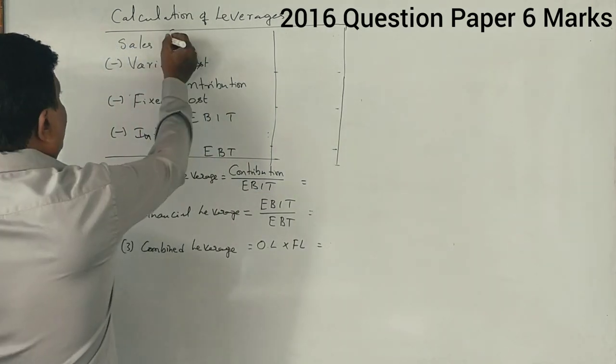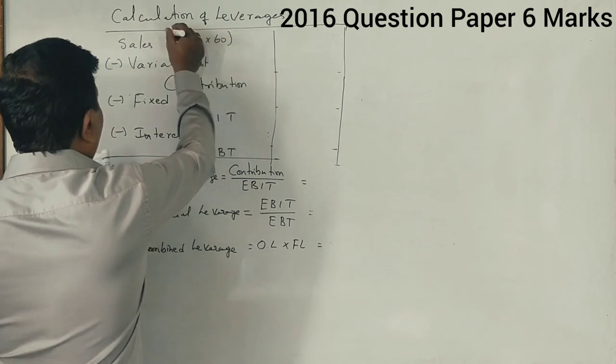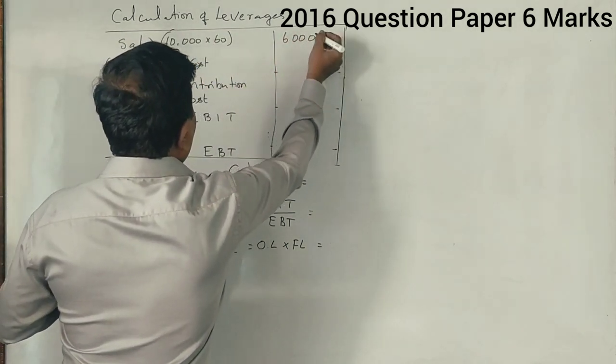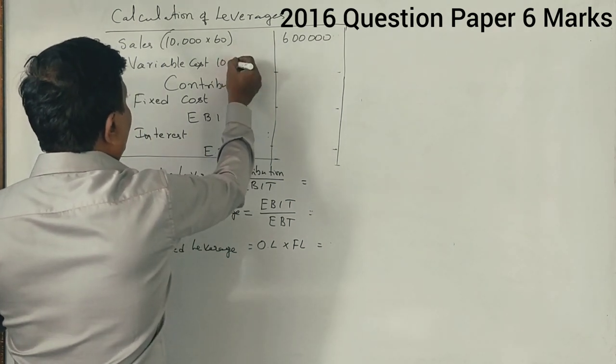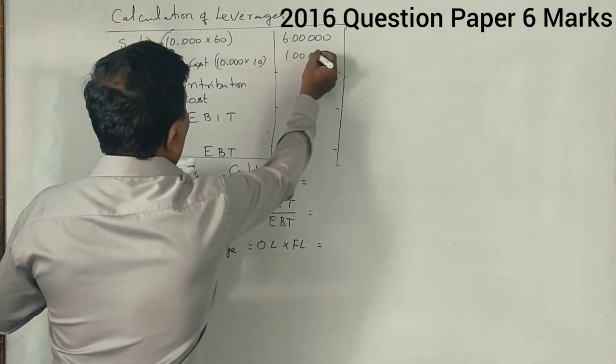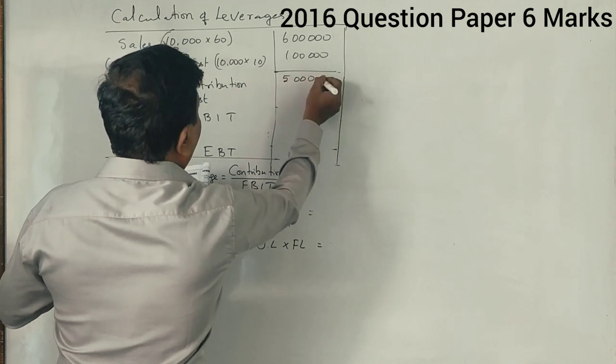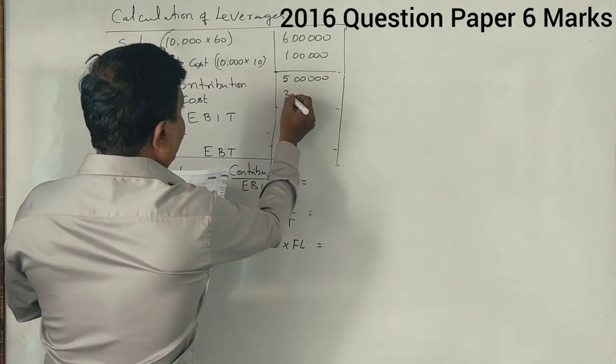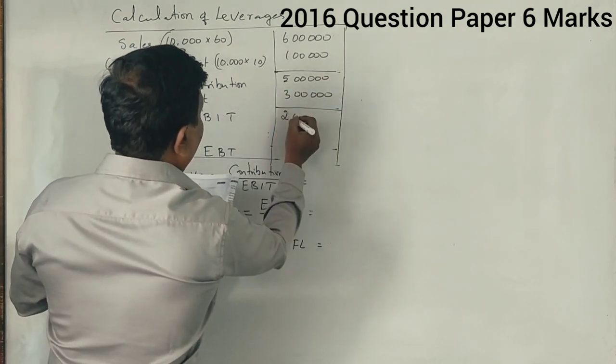Now, number of units sold is 10,000 units and selling price is 60 rupees per unit, which comes to 6 lakh rupees. Variable cost is 10,000 units sold, per unit variable cost is 10 rupees, which comes to 1 lakh. So 5 lakh rupees is the contribution. And fixed cost is 3 lakh rupees, so total EBIT is 2 lakh rupees.